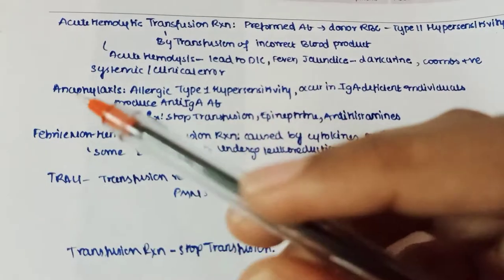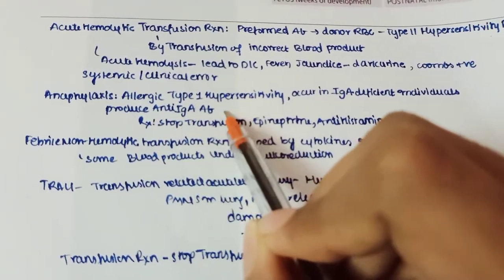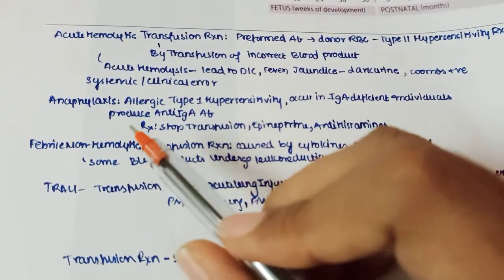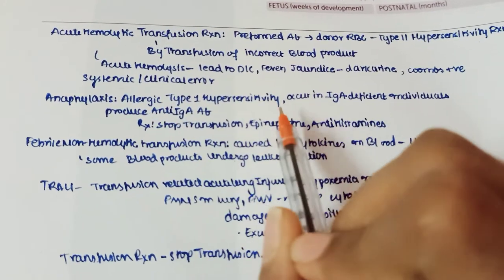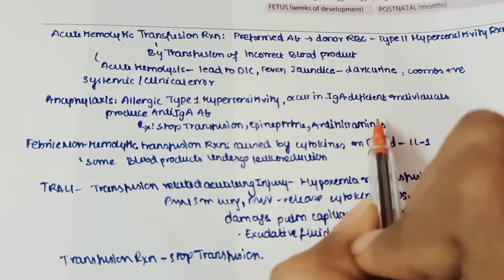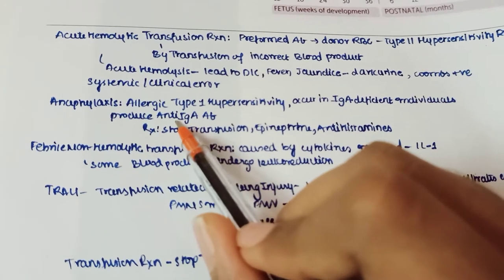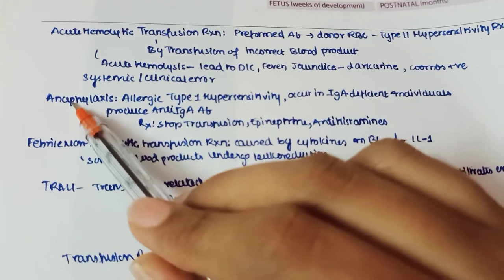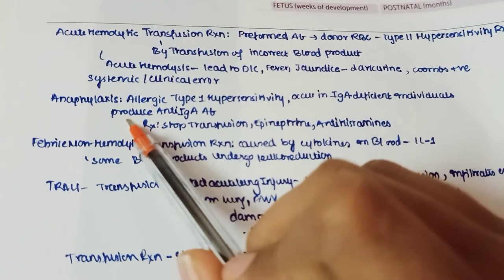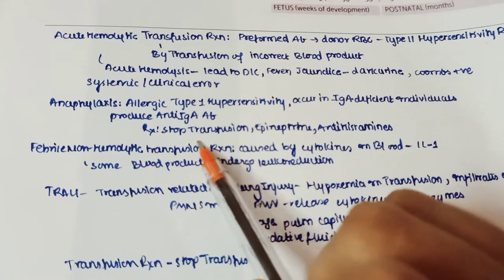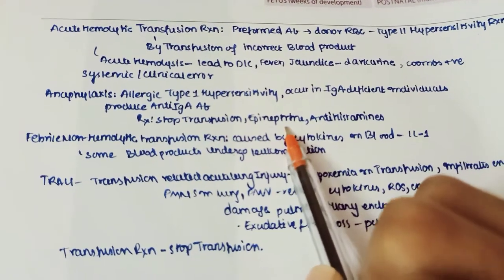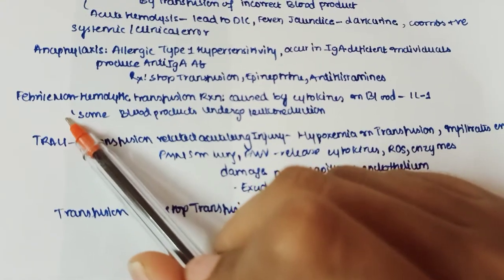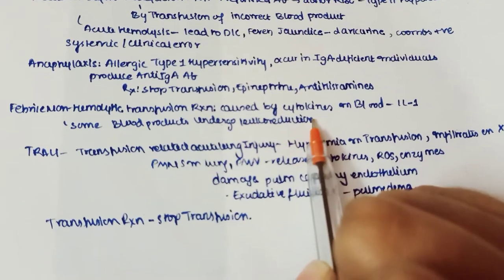Anaphylaxis is a type 1 allergic hypersensitivity reaction occurring in IgA-deficient individuals who produce anti-IgA antibodies. Type 2 hypersensitivity is antibody-antigen mediated, while type 1 is due to allergy. Treatment for anaphylaxis is to stop the transfusion and give epinephrine.